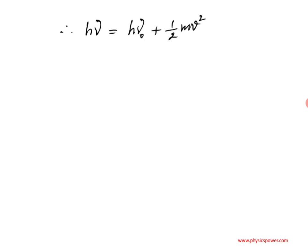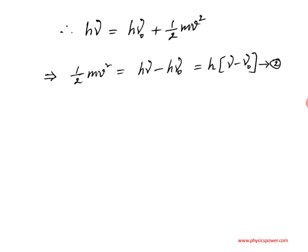We can analyze the relation between kinetic energy and frequency of incident radiation. Rearranging the equation gives: ½mv² = hμ − hμ₀, which can also be written as h(μ − μ₀). In this equation, hμ₀ is a constant, and m and h are also constants. So the variables are the velocity of the electron and the frequency.